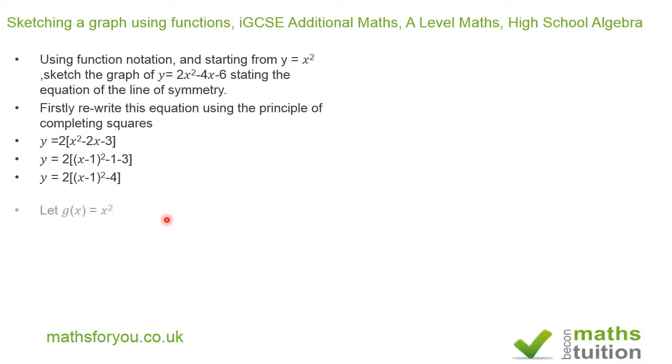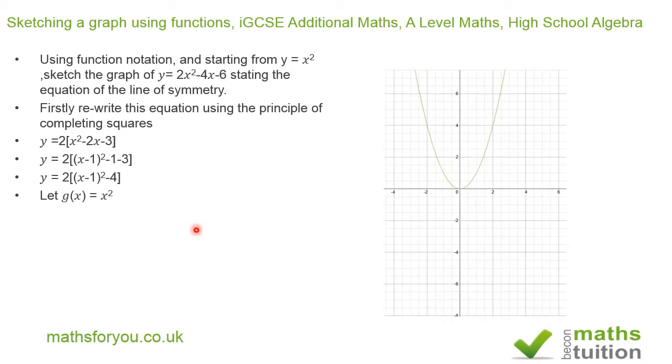Now if we start from, let's say let g of x equal x squared, because we're supposed to start from y equals x squared. If we say g of x equals x squared, our graph will look something like this one here. That's the graph of g of x, or y equals x squared.